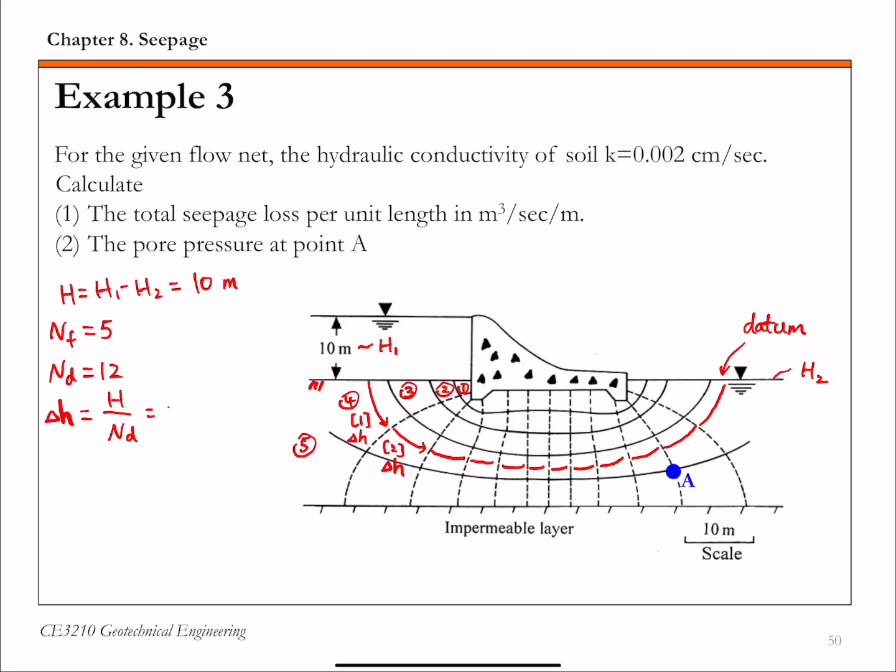Number of potential drops. And this is, this is the plug-in numbers, 10 over 12, 0.833 meter. So that's what we can read directly from the graph. And also that potential drop delta H we can calculate given this flow net.